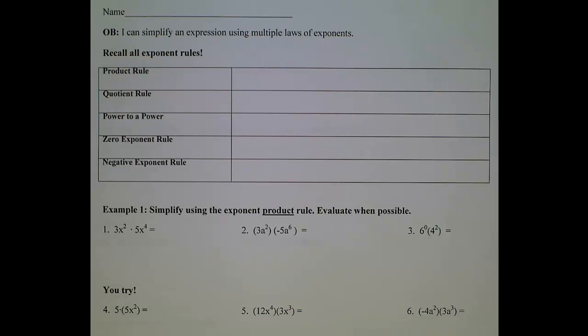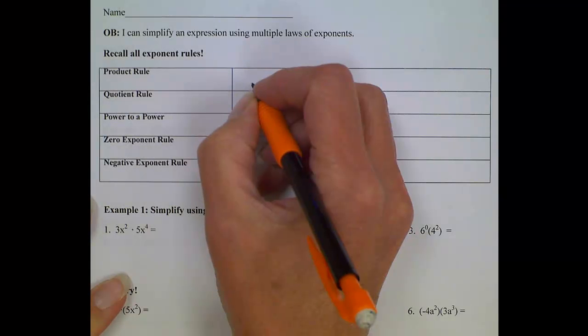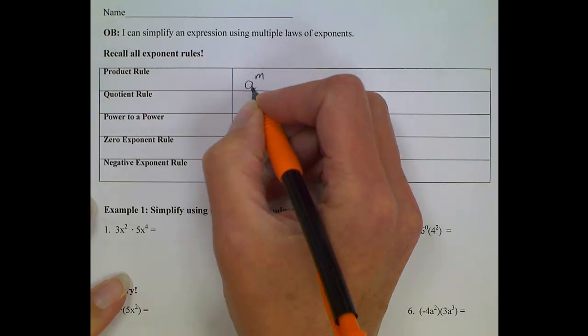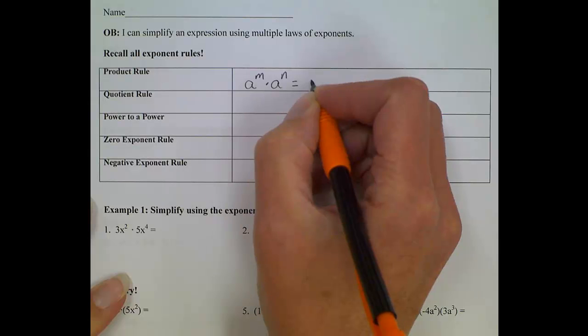Before we get into it, we're going to do a quick review of the rules that we should have down pat. Product rule: for when we're multiplying two terms together that have the same base. So if we have a to the m power times a to the n power, we take those two exponents and add them together.